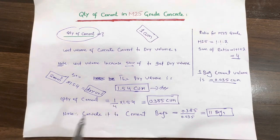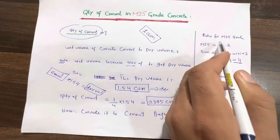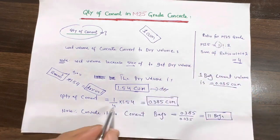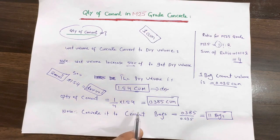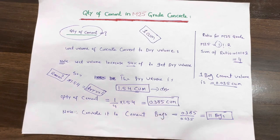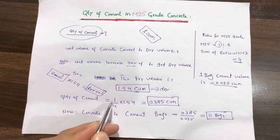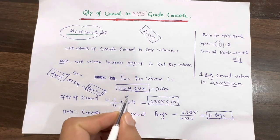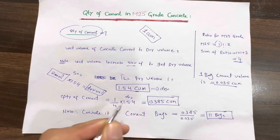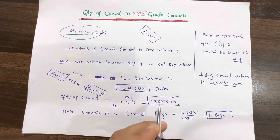The wet volume must be converted to dry volume. So the quantity of cement equals 1 — which is the part of cement — divided by the sum of ratio, which is 4, multiplied by 1.54 for 1 cubic meter. Therefore we get 0.385 cubic meters as the volume of cement. The sum of ratio is 4 and cement has 1 part in the M25 grade concrete ratio, multiplied by the dry volume of 1.54, since wet volume was 1 cubic meter increased by 54%.